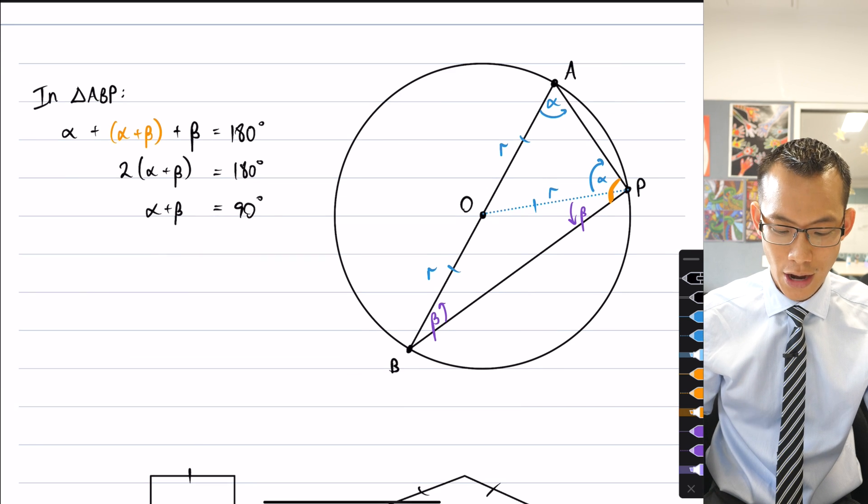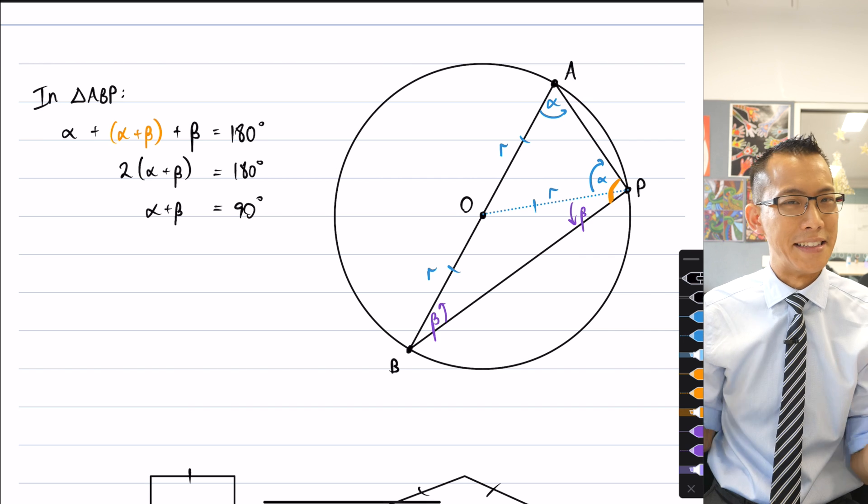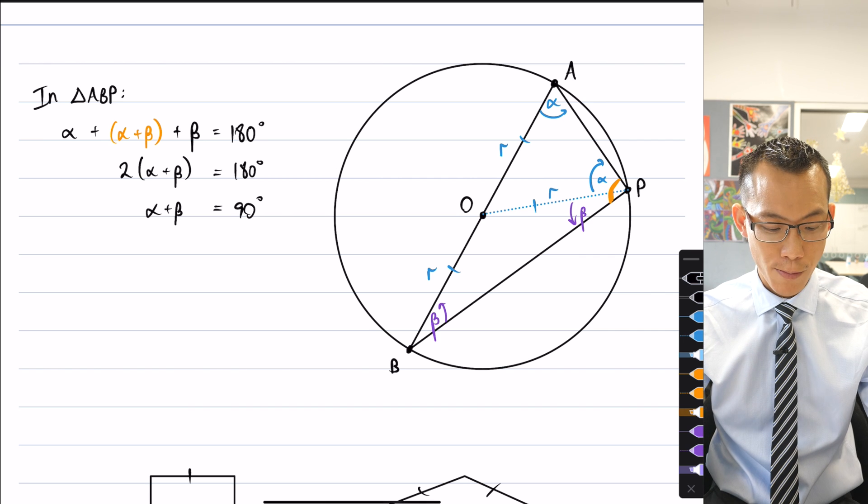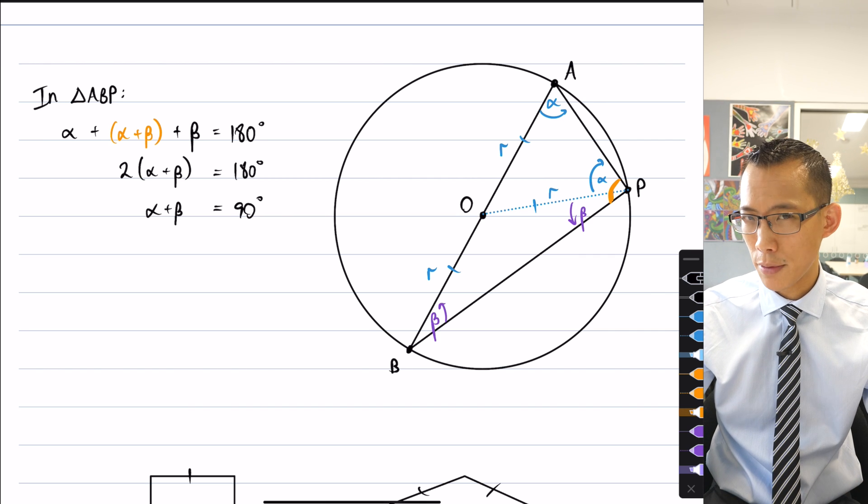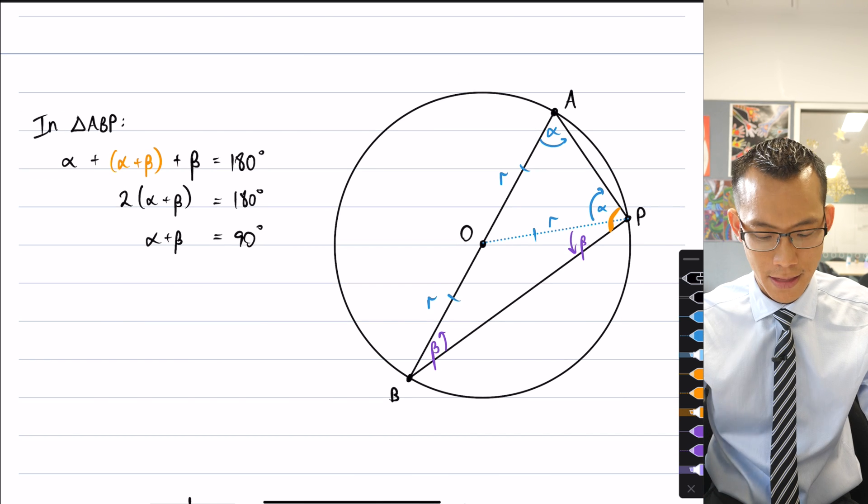So what I'm going to now do is show you two proofs for this, because I love problems which have multiple proofs. Each proof highlights the strengths of a couple of different approaches, and I want you to just have a think before you look at these two different methods.